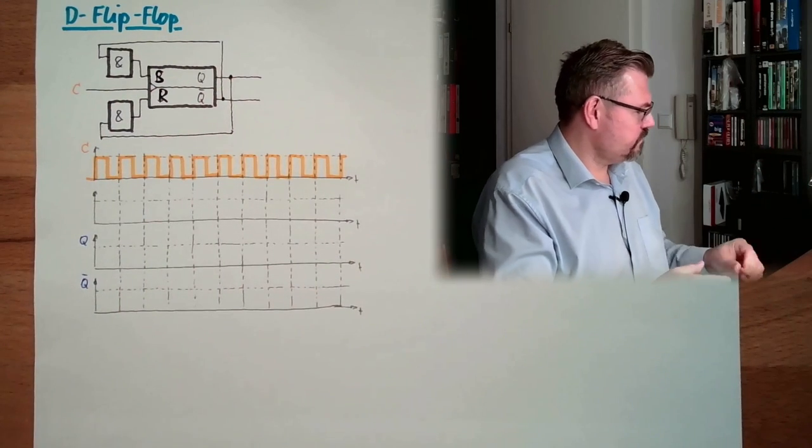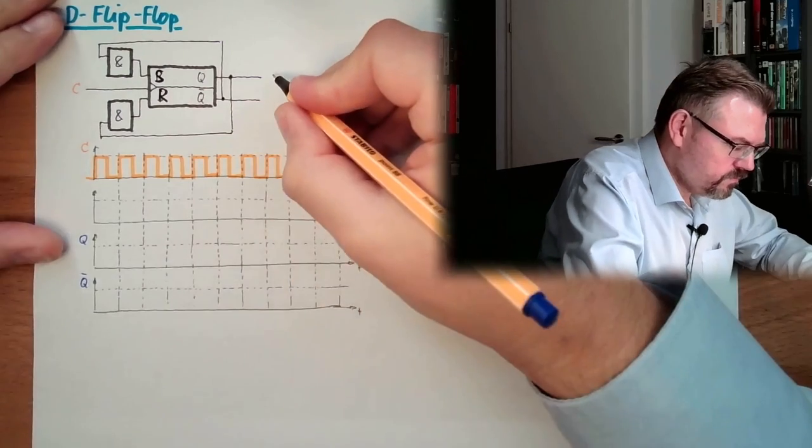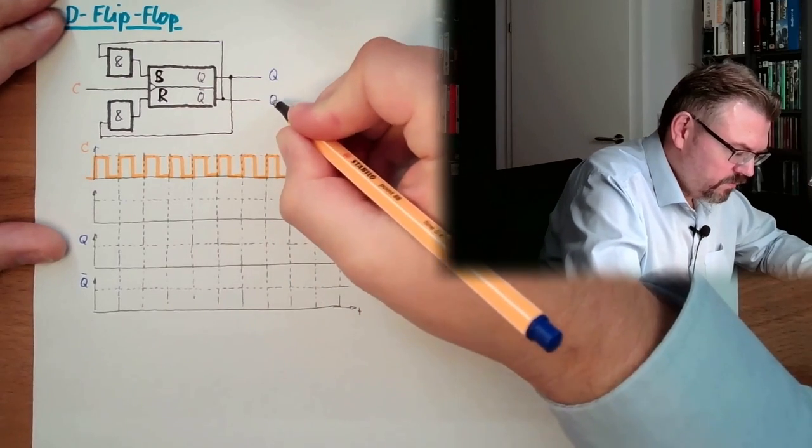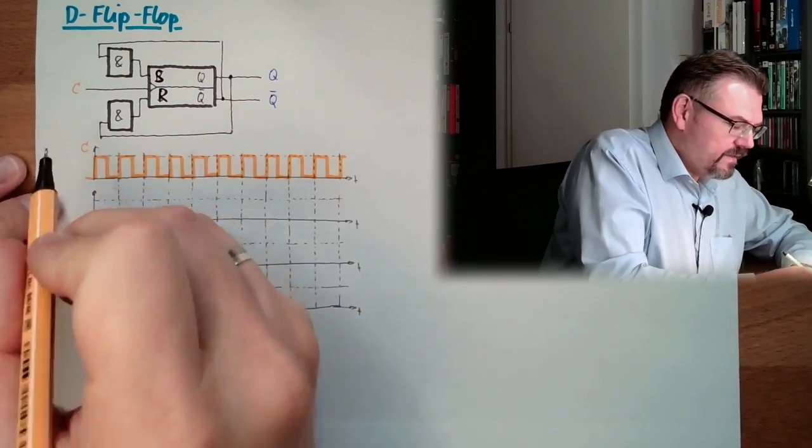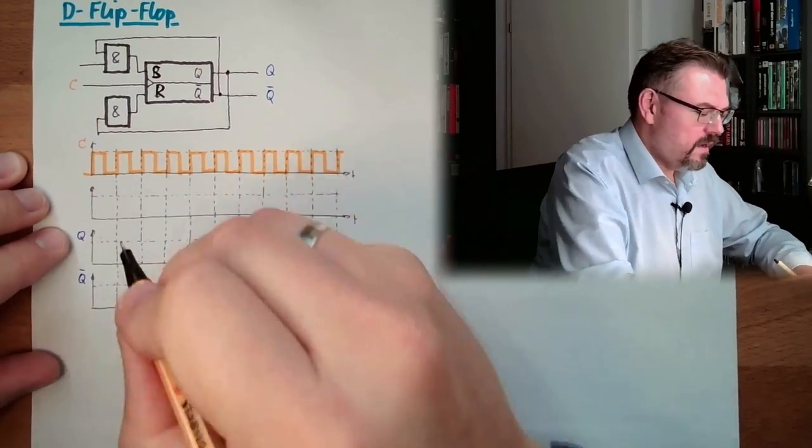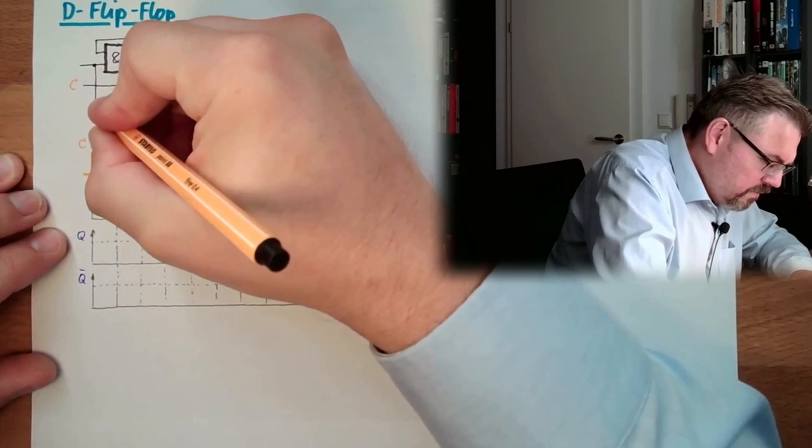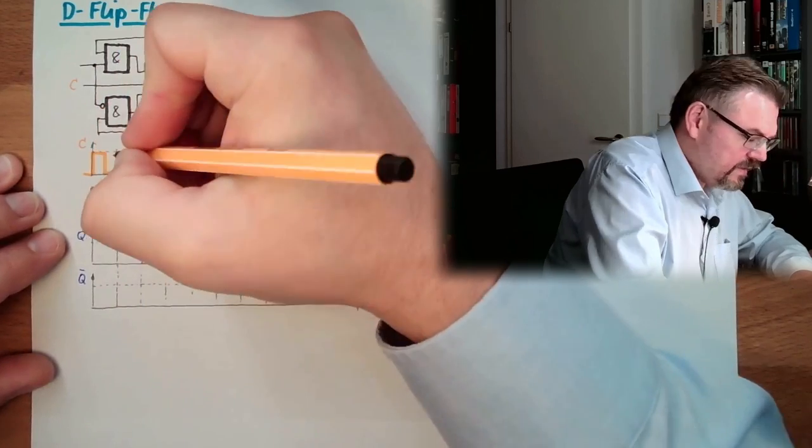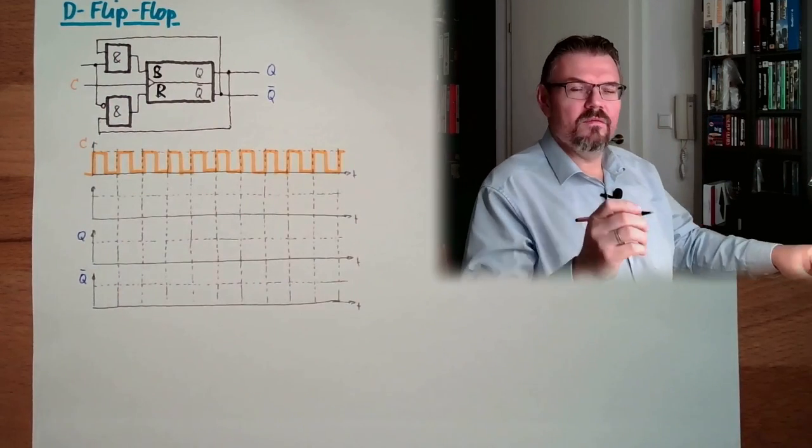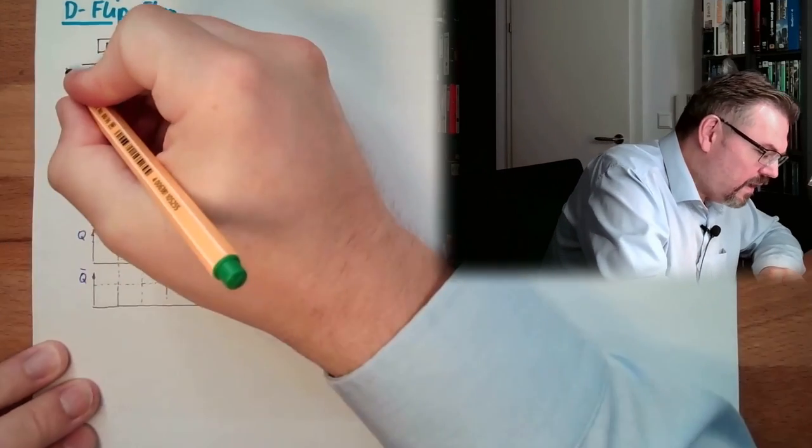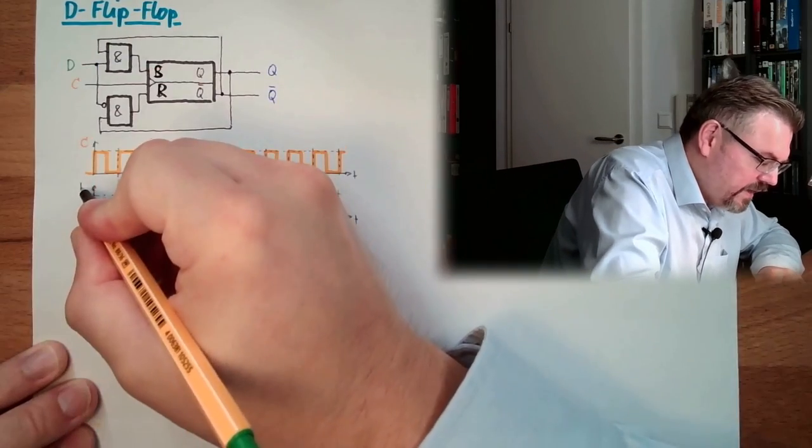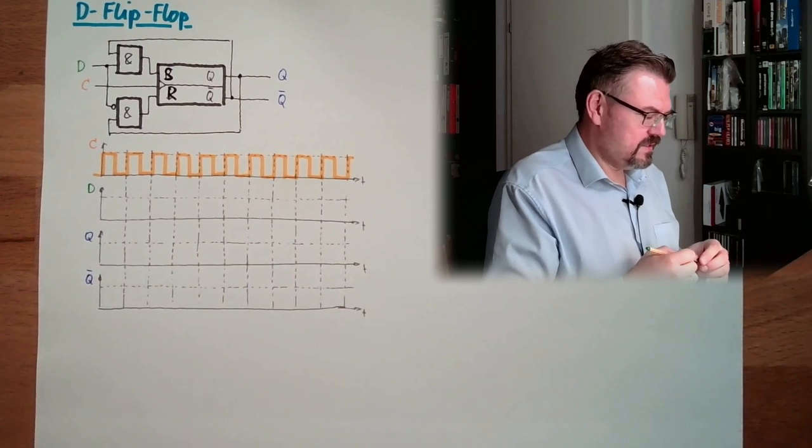All right. So we have here Q and not Q. And now we have a D line. And this D line is going in here and is also going down here, but not like a T toggle flip-flop, but here with not. All right. So we have here the D line, data line is also called. Why it's data line? We will just see.